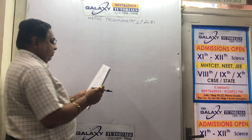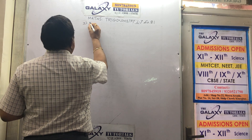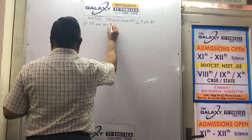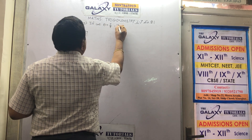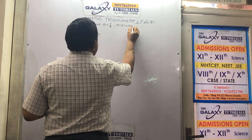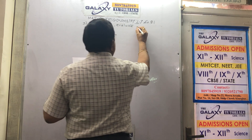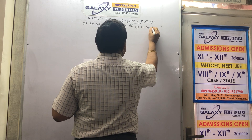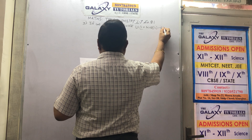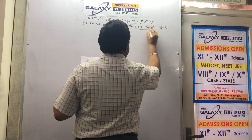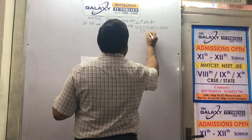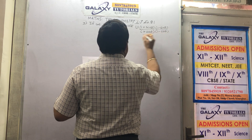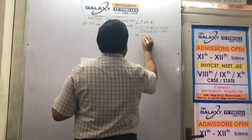Going back to sum number 7. If cot θ = 7/8, evaluate: first, (1 + sin θ)(1 − sin θ) divided by (1 + cos θ)(1 − cos θ); and second, cot² θ. Two things I am supposed to find out. Same method.